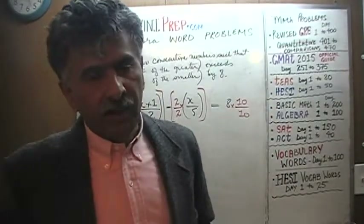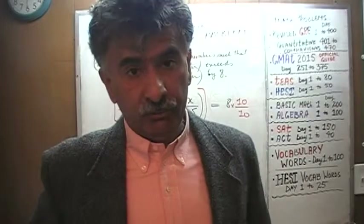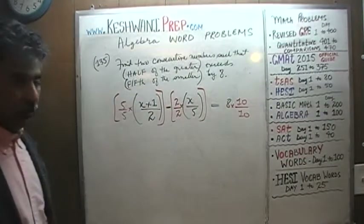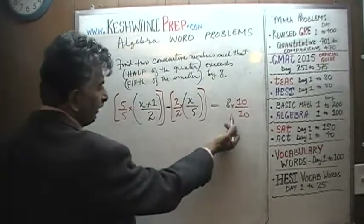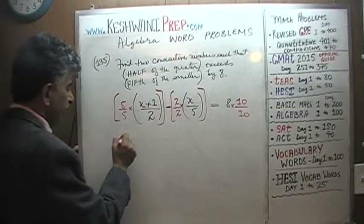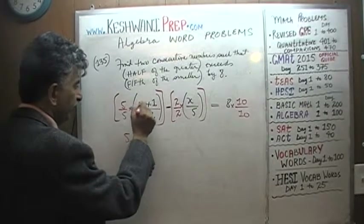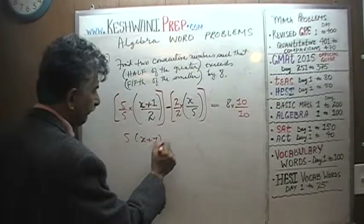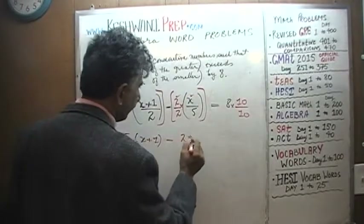Nobody has the right to brag and say, 'Look, I have a denominator of ten.' Everybody else is going to say, 'Big deal, so do I.' So it plays no role. Let's work on it now — we're not going to pay any attention to the denominator. We have five times this quantity — five times x plus one — then we have minus two times x.